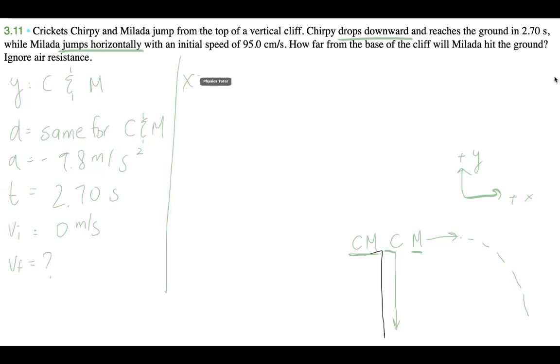Now for the x component, we just have Milada. She's jumping horizontally with 95 centimeters per second in the x component. Recall that for the x direction, we only have distance, speed, and time - no acceleration. Vi is 95 centimeters per second. The distance we don't know; that's what we're trying to figure out. This time is the same time as this.